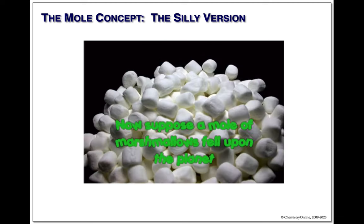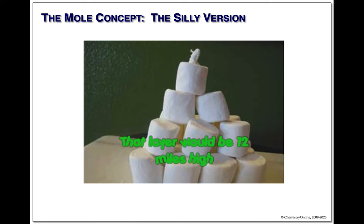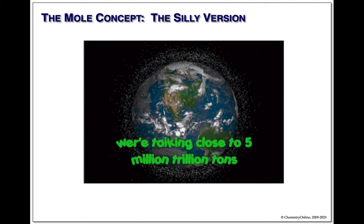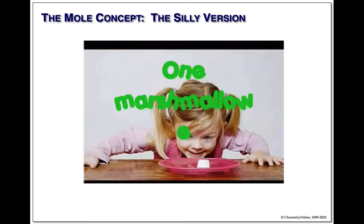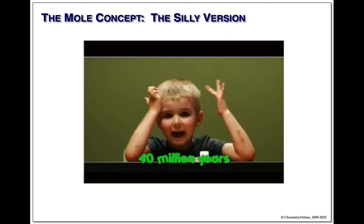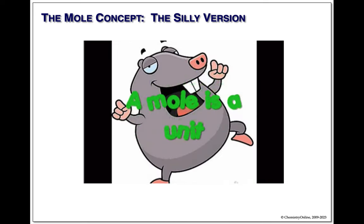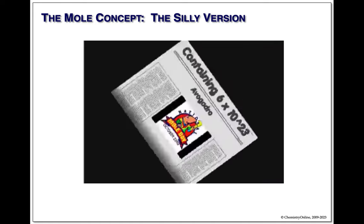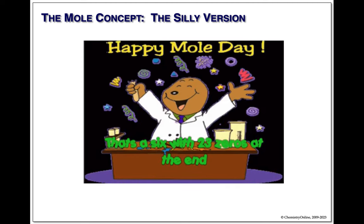Now suppose a mole of marshmallows fell upon the planet — over each square inch of land and sea. That layer would be 12 miles high and block out the sun — close to 5 million trillion tons. Maybe we could save ourselves if we all started eating one marshmallow each second. With 5 billion people munching, how long do you think it'd take? Forty million years — and that's without a bathroom break. A mole is a unit containing 6 times 10 to the 23rd — much too big a number to comprehend.